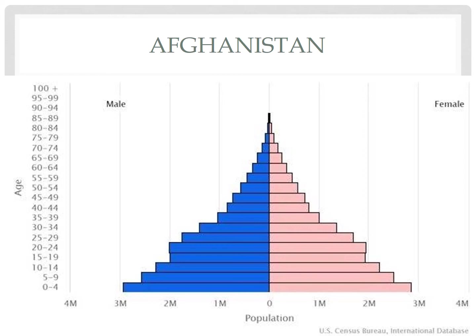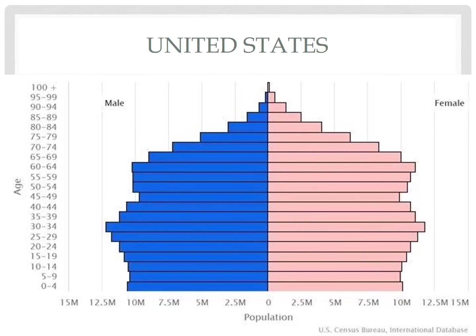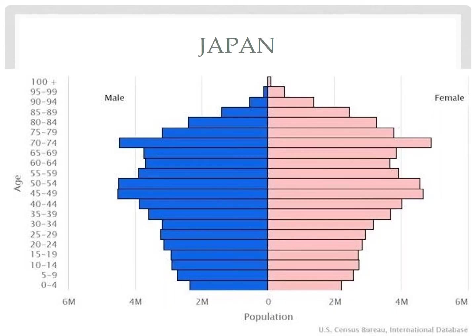Countries that are growing rapidly will have a broad base — their bottom is the biggest. A country like Afghanistan may face challenges providing for the education of this large population, and the creation of jobs could be a problem in the near future. A country approaching zero population growth, as the United States is, may struggle with the number of elderly people who need assistance with retirement and health care. A country in population decline, where the bottom is very narrow and the biggest cohorts are near the top, like Japan, may experience labor shortages and declining demand for consumer goods and services and potentially economic decline.